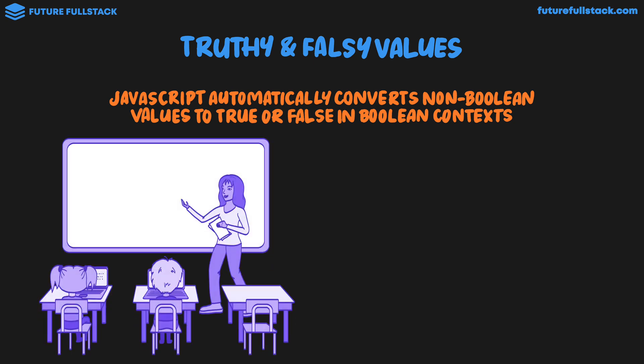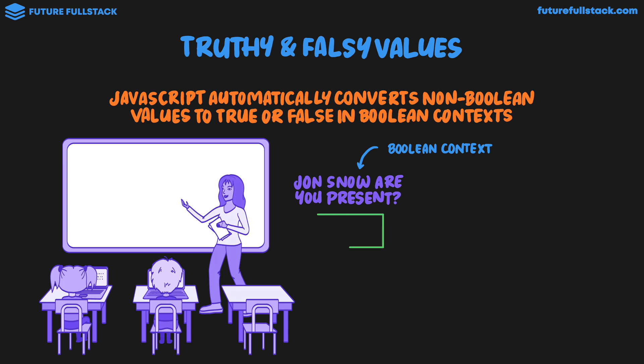We'll first look at when a student is present. So the teacher asks, "John Snow, are you present?" And this question is a boolean context — the answer is either true or false, that is the student is there or they are not there. So let's say John Snow is present and he responds "yes." We could think of yes as a string. It's not like John Snow is responding boolean true; he's using language to say yes, I am present. So if the student says anything, they are present.